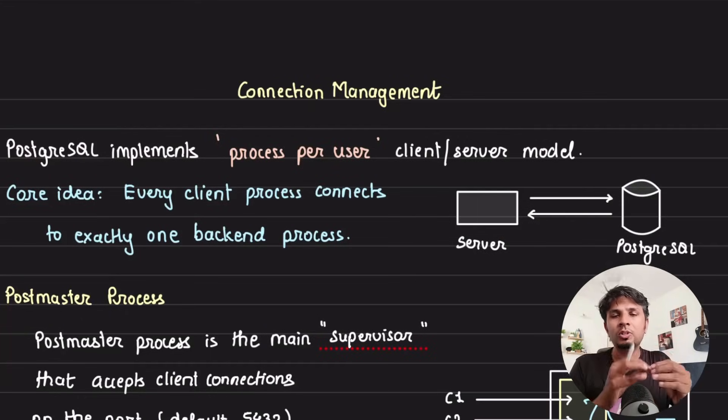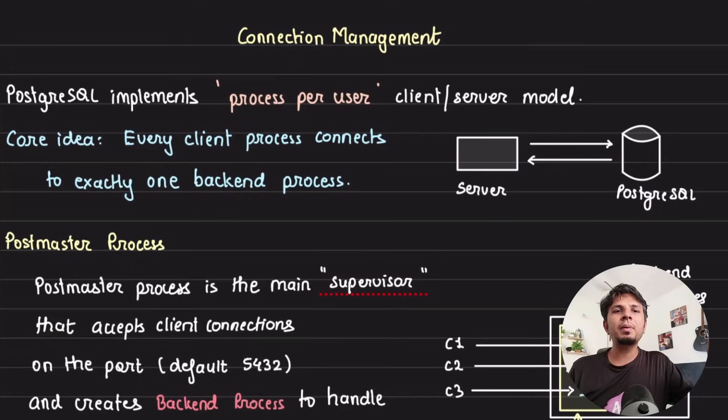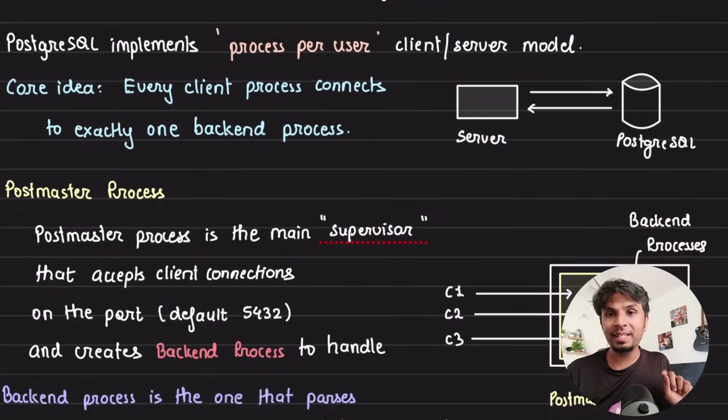Postgres implements something called process per user client server model. The core idea is really simple: every time a client connects to the Postgres server, your Postgres server creates a new process to handle that connection. This means that if there are 10 clients connecting to the Postgres server, your Postgres server is spinning up 10 different processes to handle each of that connection. Now that seems very expensive. It is, but it has its own advantage.